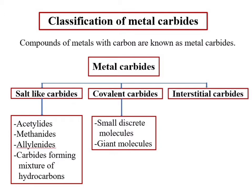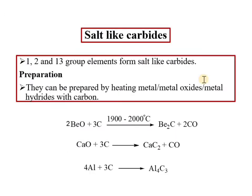We can also divide carbides into discrete molecules and giant molecules as another classification scheme. Salt-like carbides are formed by group 1 and group 2 members — the alkali metals and alkaline earth metals — as well as group 13 elements.